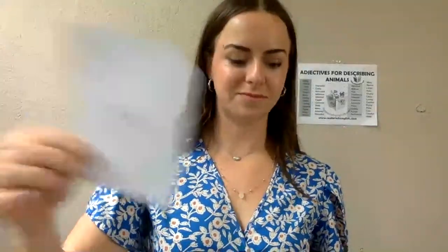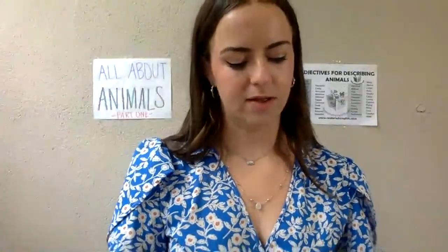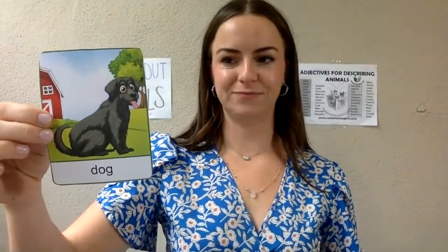So for cow, we say 'moo.' This is a cow and we say moo. Duck says 'quack quack' — spelled like this: quack. For pig, we say 'oink oink.' For dog, we say 'ruff ruff.'